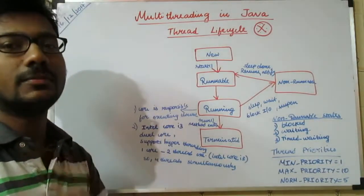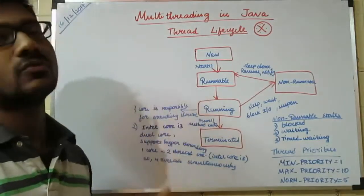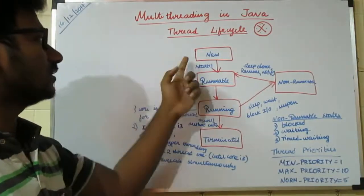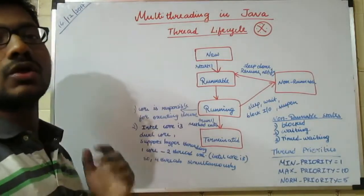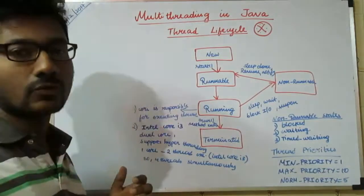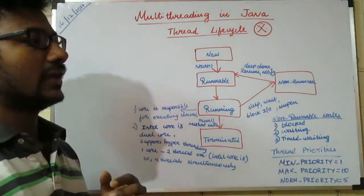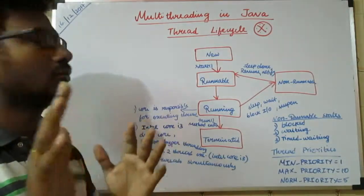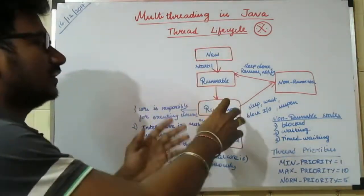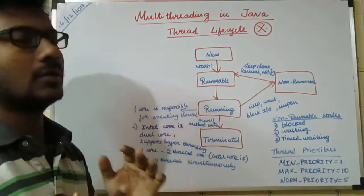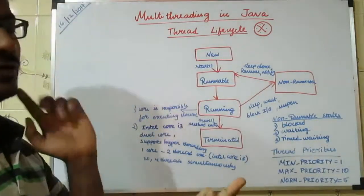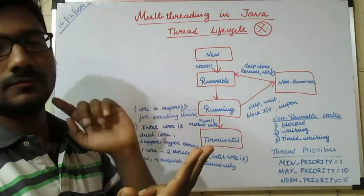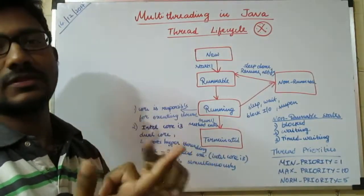We will look at a real-time use case. First, thread — this is the first step: new. A new thread is created. For example, I will relate to the real-time example. This is just a bike. Your family has three members: your father, your mother, your brother.